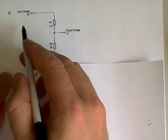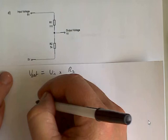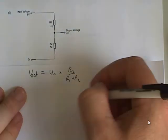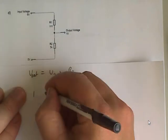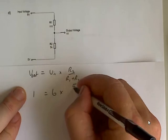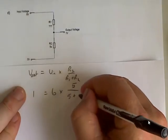So V out equals V in times R2 over R1 plus R2. And in this case V out is 1 volt and V in is 6. So I'll show you another way we can do it with substituting numbers in first. So V out is 1 equals 6 times R2 is 5, I'm just going to work in K over 5 plus R1.